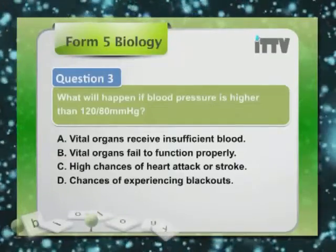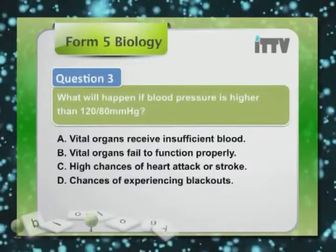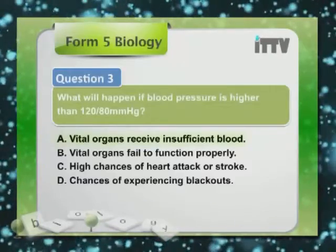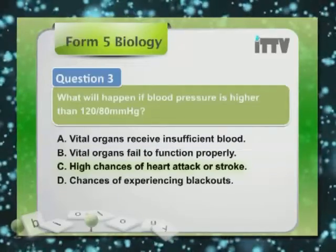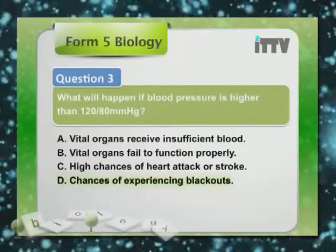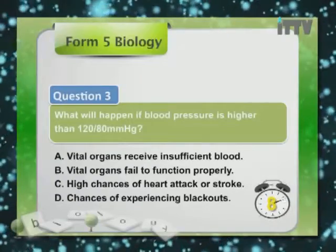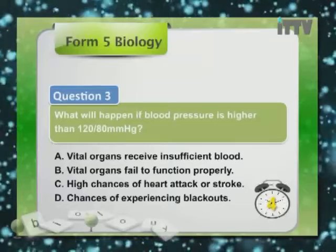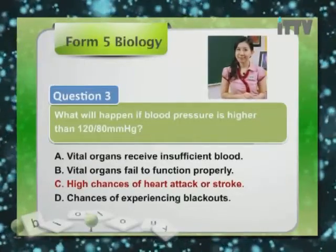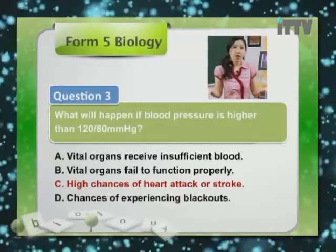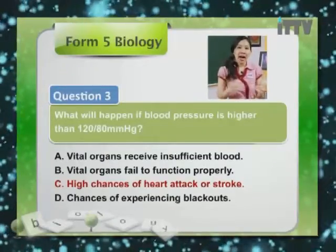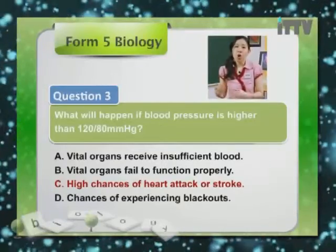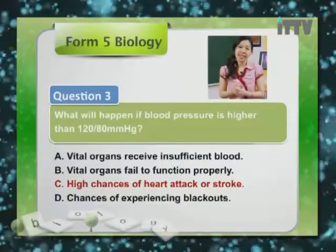Question 3: What will happen if blood pressure is higher than 120/80 mmHg? A. Vital organs receive insufficient blood. B. Vital organs fail to function properly. C. High chances of heart attack or stroke. D. Chances of experiencing blackouts. The answer is C — any blood pressure higher than the normal rate of 120/80 mmHg is indicative of high blood pressure, and anyone with hypertension has a higher chance of getting heart attack or stroke.